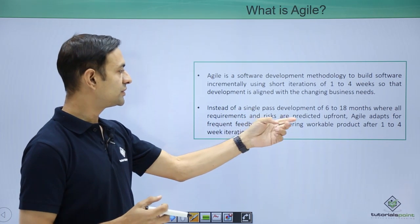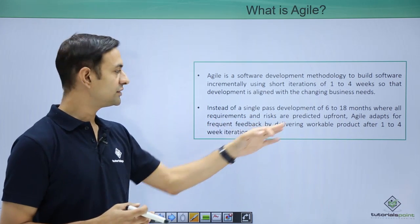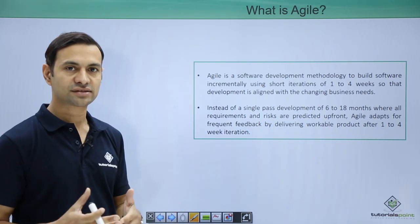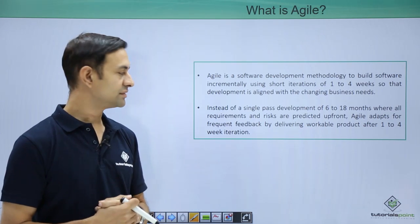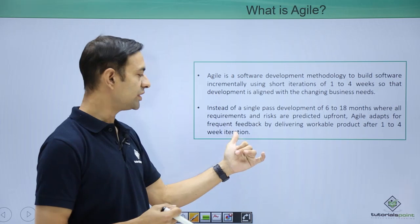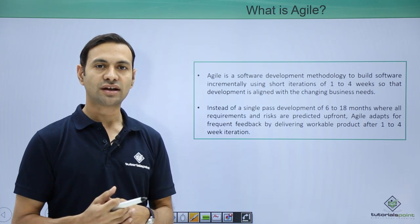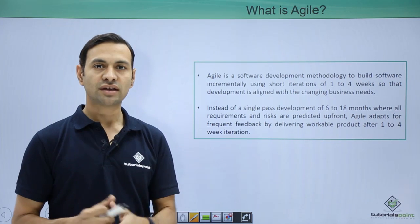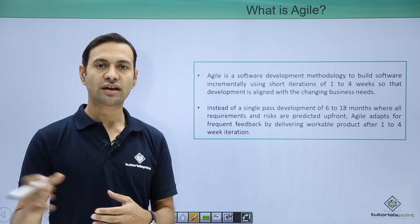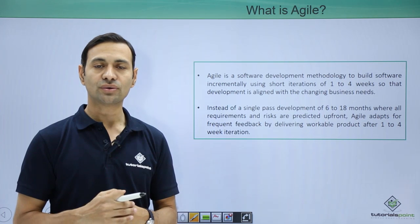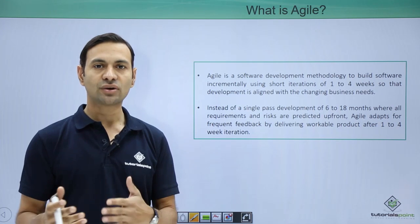Instead of single pass development of 6 to 18 months where requirements and risks are predicted up front, Agile adapts by incorporating changes after every one month or half a month with frequent feedbacks. So we have a workable product after every 1 to 4 weeks of iteration. We check with the client — 'so far we have developed this, can you give feedback after a month of development?' Client says ok things are going in line or requests changes to be made right now.